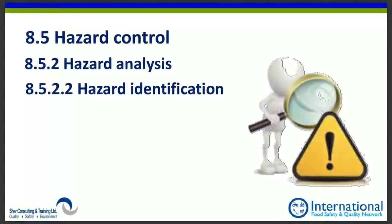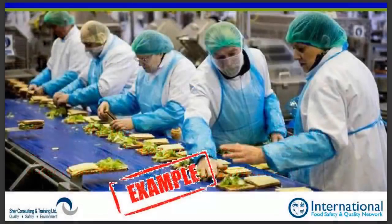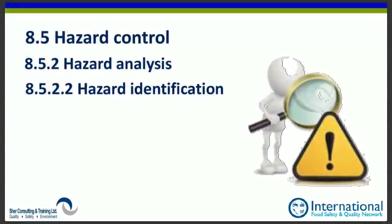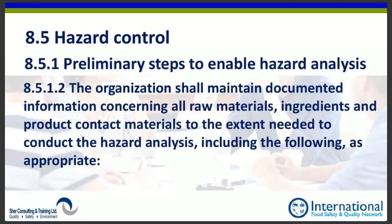The new standard adds two things not previously mentioned when gathering raw material information for risk assessment. First, the country of origin of the raw material must be identified, as it may affect decisions made by the food safety team. Second, the technological origin of the raw material — whether it comes from animals or plants — should be identified. For example, ingredients like lecithin or gelatin can come from different sources, and that should be documented.